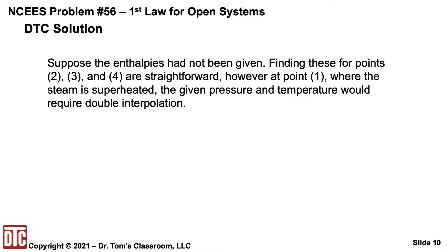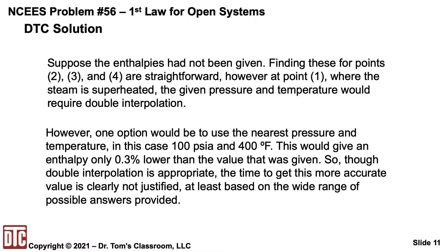One follow-on thought: suppose the enthalpies had not been given. Finding them for points two, three, and four is fairly straightforward. However, for point one, where the steam is superheated, the given pressure and temperature would theoretically require double interpolation. One option is to go to the nearest pressure and temperature — in this case, 100 psia and 400 degrees F. As it turns out, that gives a value only 0.3% lower than the value actually given. So while double interpolation is appropriate, realize that just picking the nearest value will give you an answer, and since the answer choices are typically spread out, you'll probably be just fine.